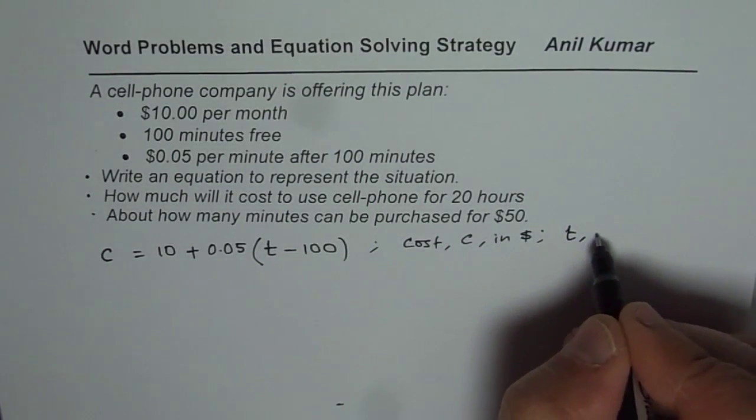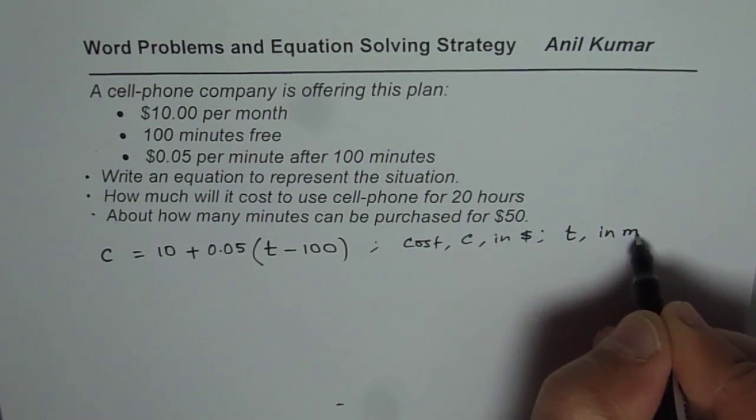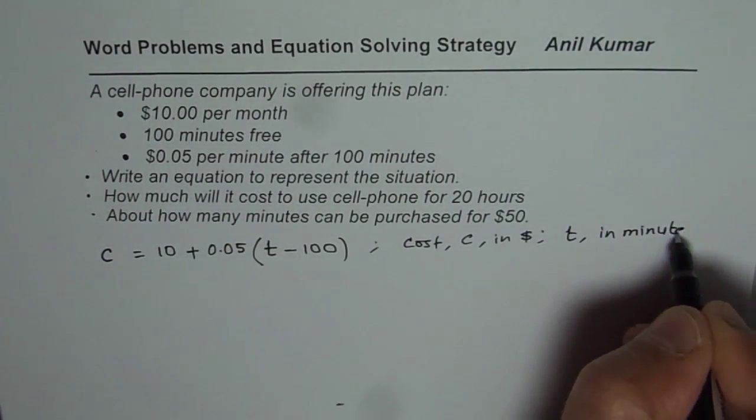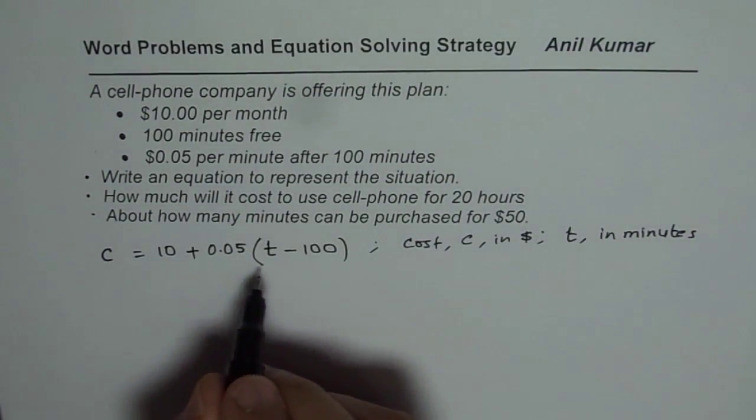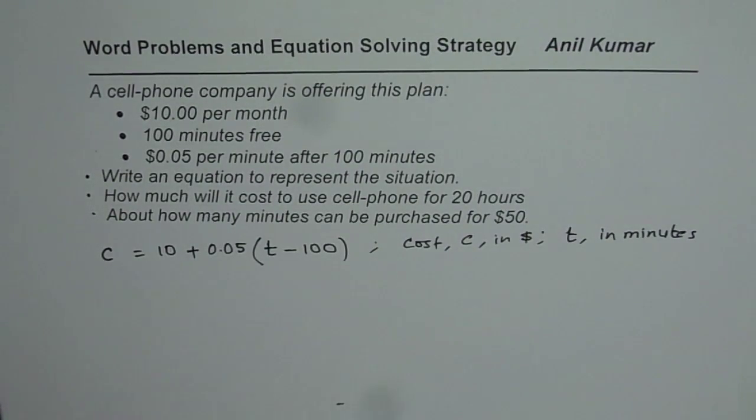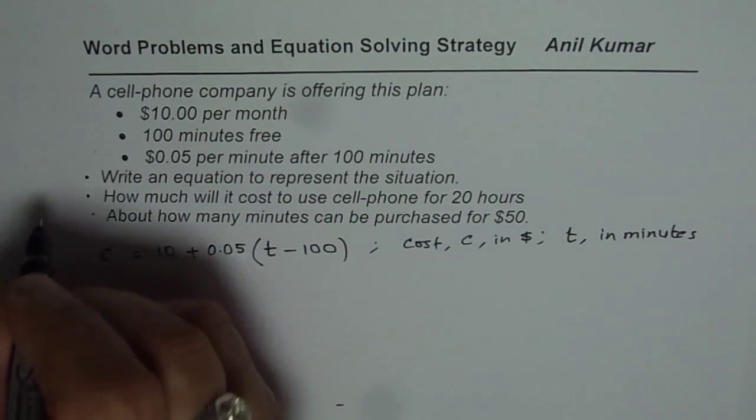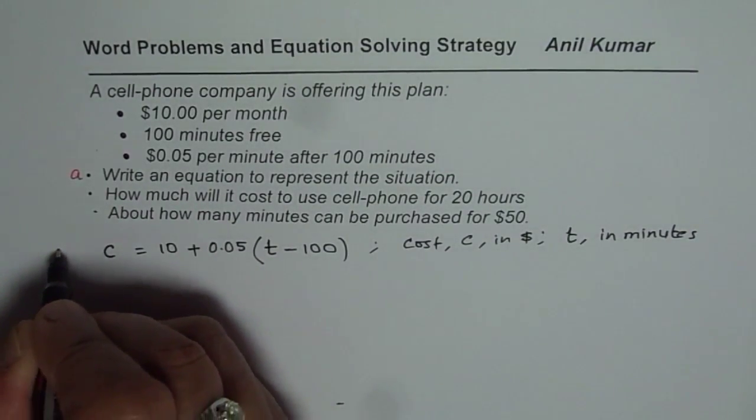Minus 100 since 100 minutes are free. So what we have here is cost C in dollars and we have time T in minutes. These are our variables and that is how they are related, so that forms an equation. So the cost is 10 plus 0.05 times T minus 100, so that becomes the equation. So that is part A, we have got part A.